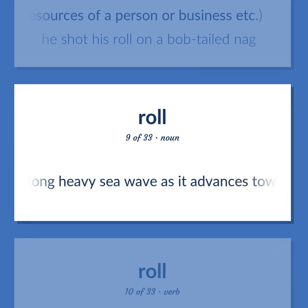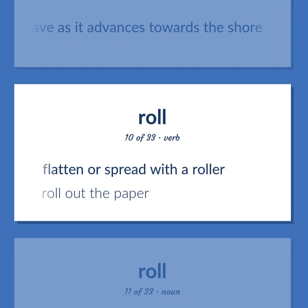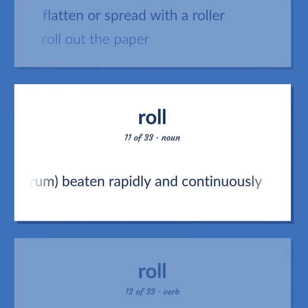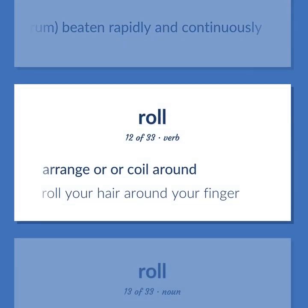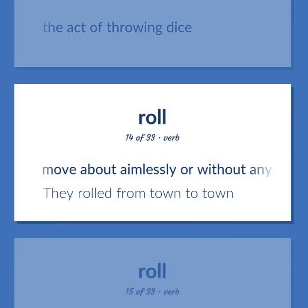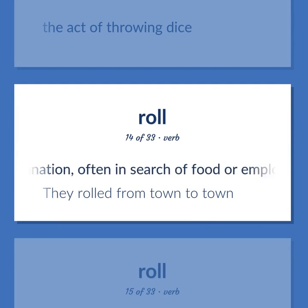Roll (continued): a long heavy sea wave as it advances towards the shore. Flatten or spread with a roller — roll out the paper. The sound of a drum, especially a snare drum, beaten rapidly and continuously. Arrange or coil around — roll your hair around your finger. The act of throwing dice. Move about aimlessly or without any destination, often in search of food or employment — they rolled from town to town.